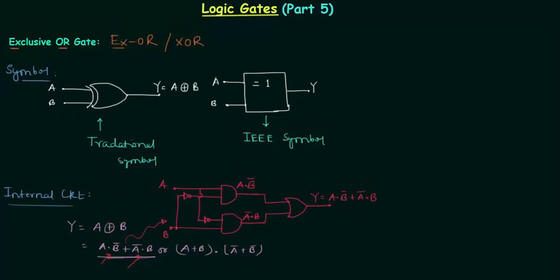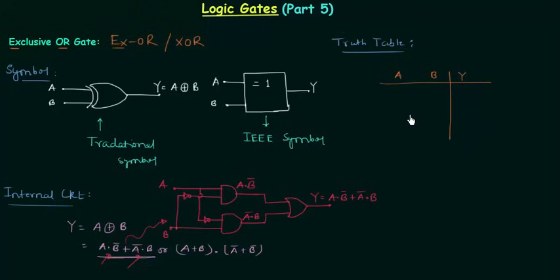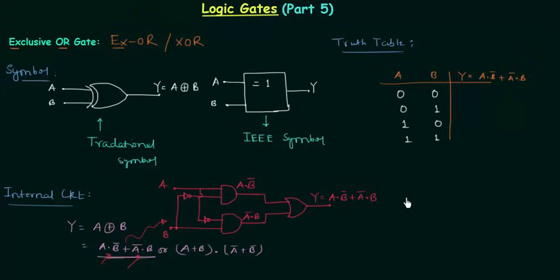Now we move to the truth table for the XOR gate, which is very important. For a two-input XOR gate with inputs A and B, there are four input combinations: 00, 01, 10, 11. We use the expression Y = A·B' + A'·B to compute output Y for each combination.